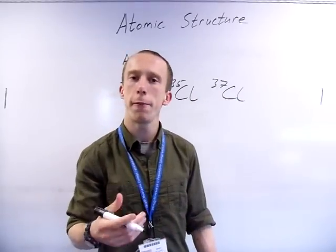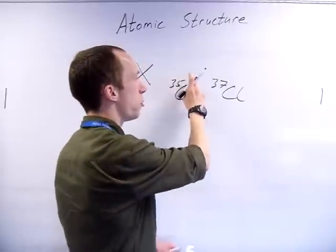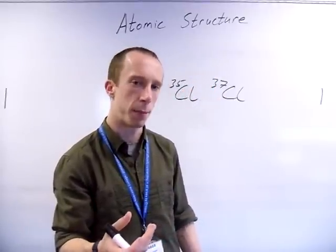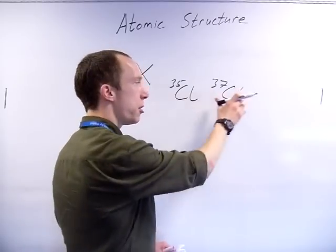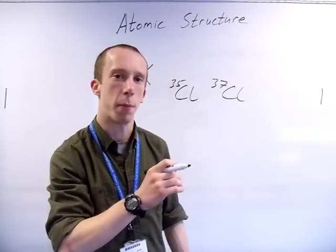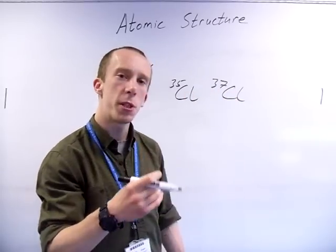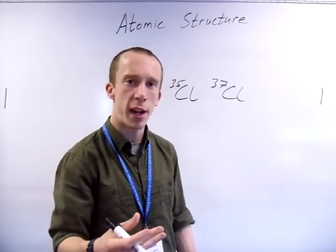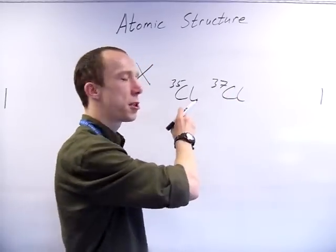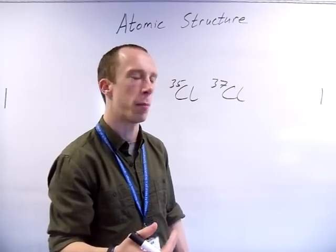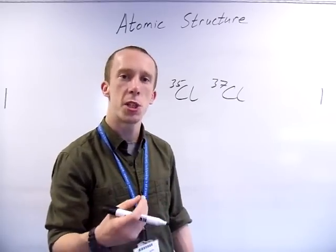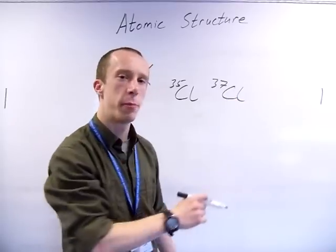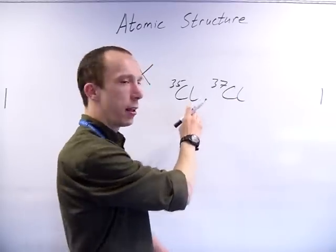The only difference with an isotope is the amount of neutrons. The amount of protons are the same, the amount of electrons are the same. So chemically, these two are exactly the same - chemical properties are determined by the electrons, they go out and do the reacting stuff. So if they are exactly the same in electrons, they will react exactly the same. The only difference is the mass because the number of neutrons are different - this one is a bit heavier than this one.